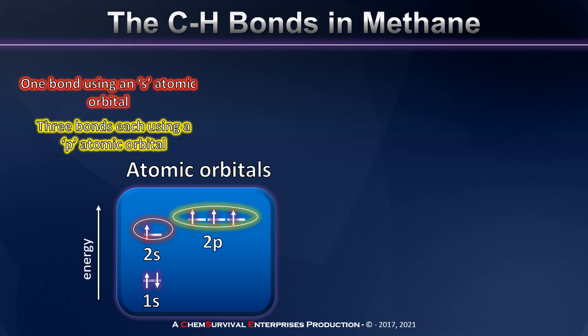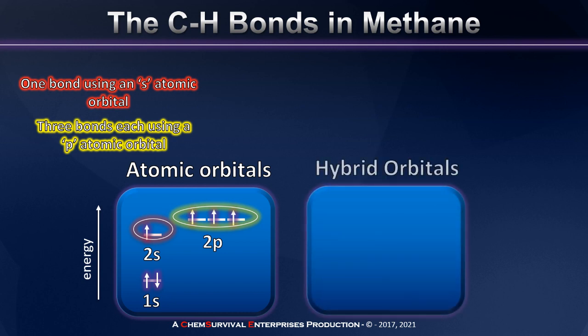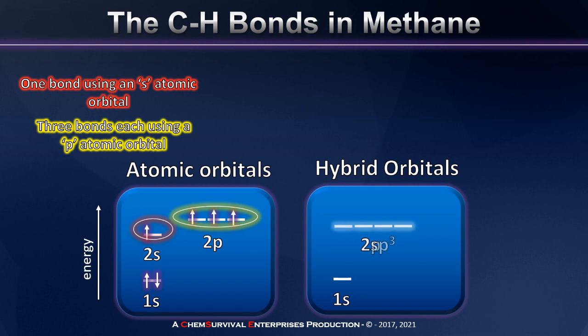In order to account for this, in the early 1930s, renowned physical chemist Linus Pauling proposed that maybe atomic orbitals can hybridize — they can blend together and share their properties. For example, the carbon atom that has a 2s and a 2p subshell could allow those orbitals to hybridize, forming a different type of orbital that has some s character and some p character.